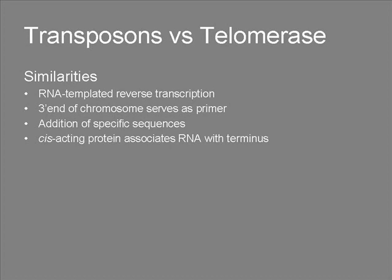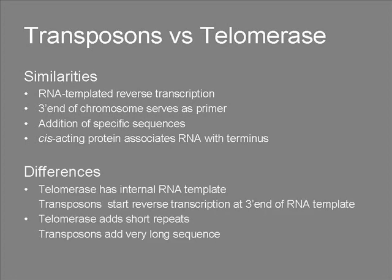For both, a protein with template RNA associates with the terminus. The differences are that telomerase polymerizes the same short sequence complementary to its internal RNA template, while reverse transcriptase of a transposon adds a very long sequence beginning at the 3' end of the template RNA.